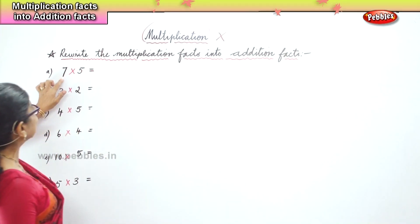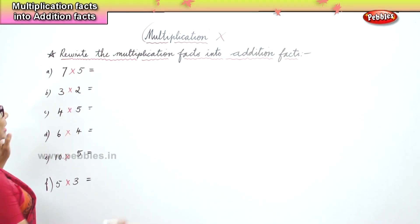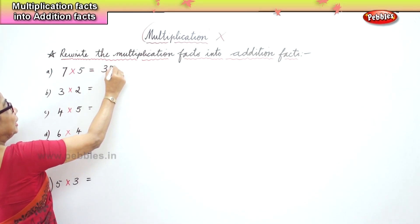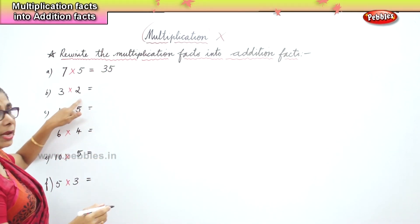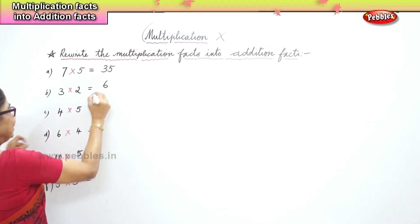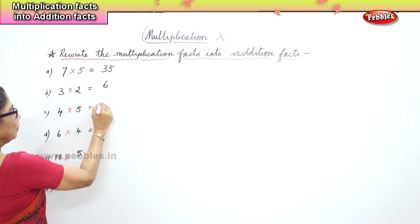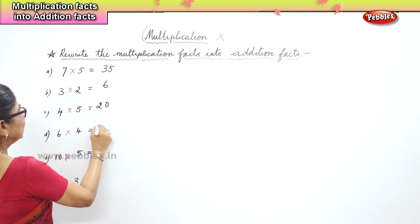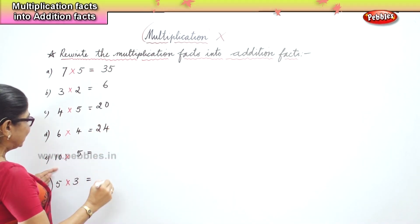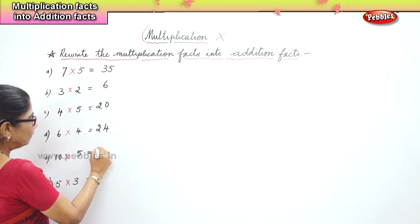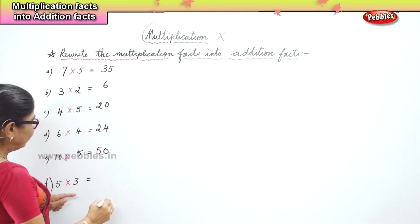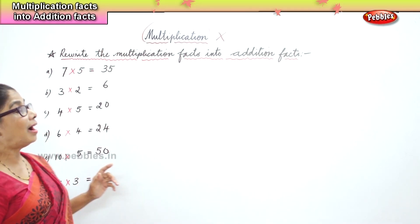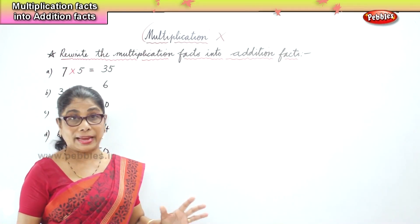Now we have here: seven fives are 35 — a multiplication fact. Three twos are 6, four fives are 20, six fours are 24, ten fives are 50, five threes are 15. Now these are all multiplication facts.